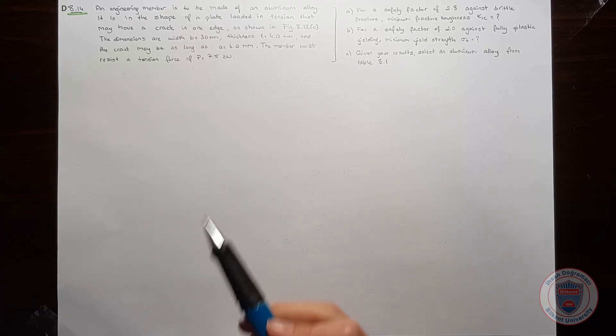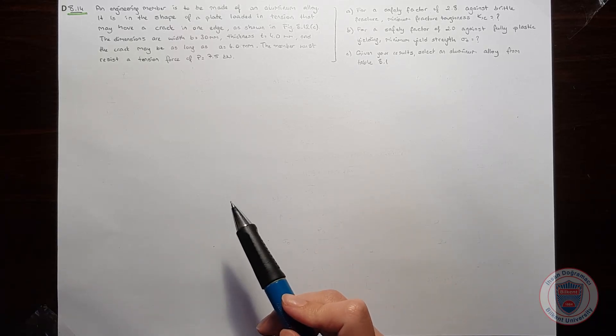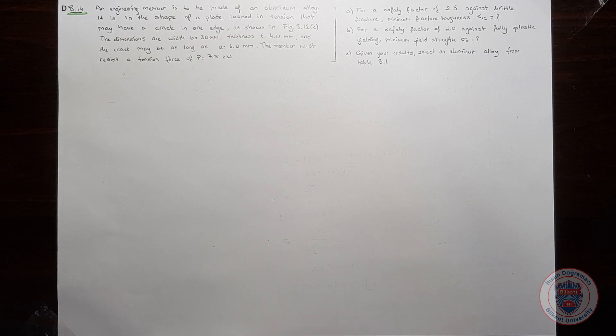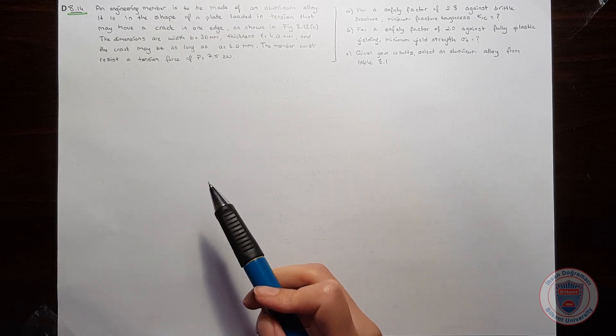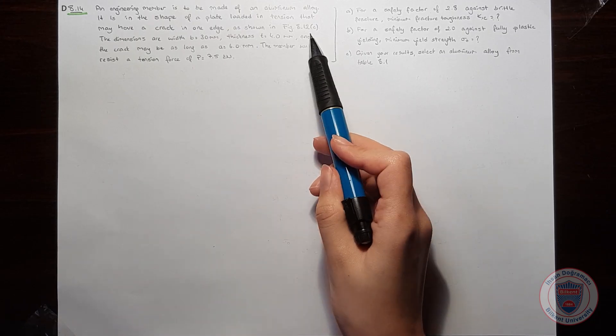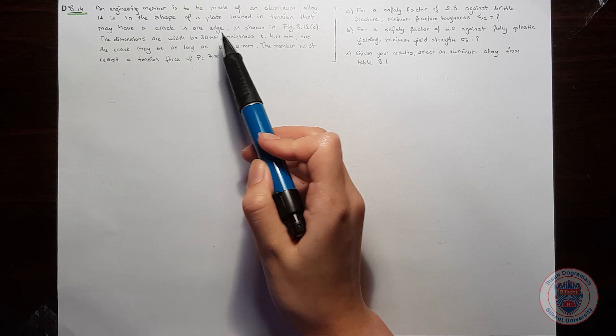In this question, we will build an engineering member out of an aluminum alloy. It will have the shape of a plate loaded in tension that may have a crack in one edge.